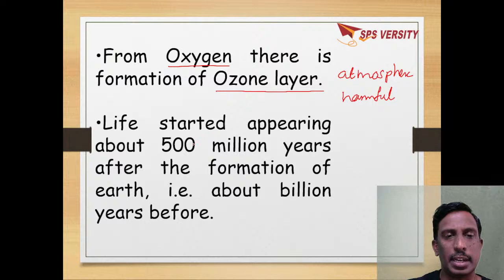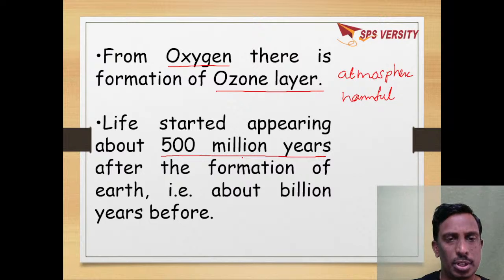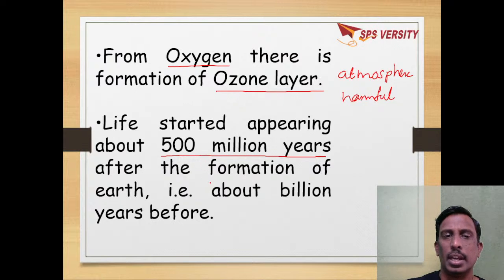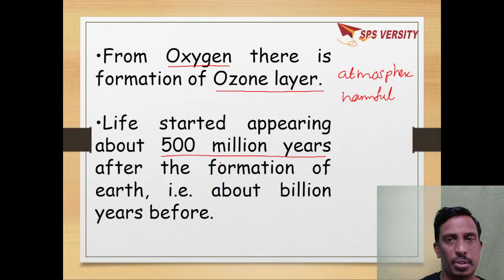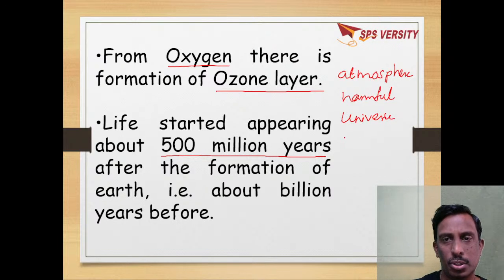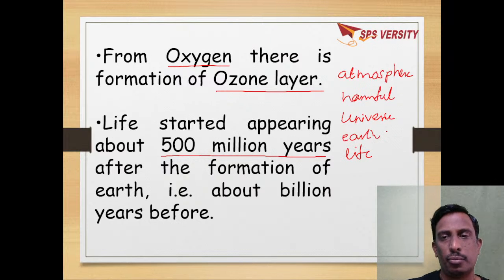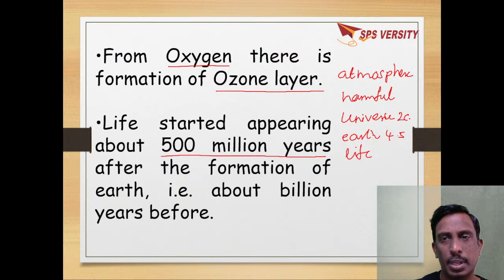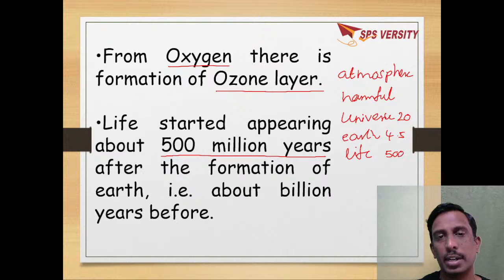Life started on the Earth 500 million years ago. Earth had originated 4.5 billion years ago, the universe 20 million years ago, and life has started appearing 500 million years ago.